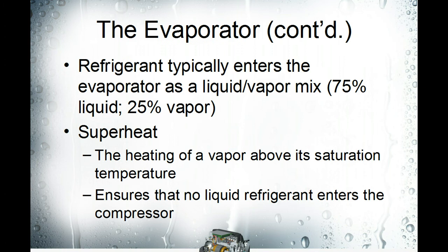When the refrigerant enters the evaporator, it does so through the metering device, and we're going to start right at that point. Because this is a cycle, there is no real good place to start, so we're going to end right back up at the metering device. When it enters the evaporator from the metering device, it flashes pretty quickly to a 75-25 mix. This is saturated refrigerant, which means if we add heat — which we're doing in the evaporator — it's going to cause it to change state.